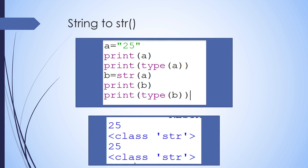Now we see string to string conversion. The existing value a = '25' is already in a string. Print a, then print type(a) to identify the existing type as string. Then b = str(a), print b displays the value. Print type(b) also shows class str — string to string remains a string.